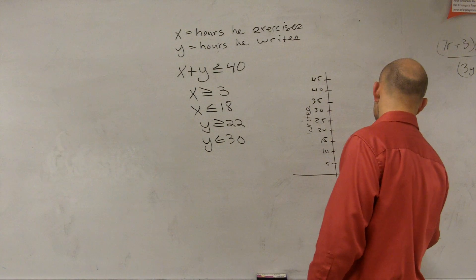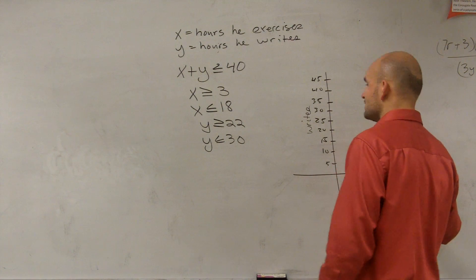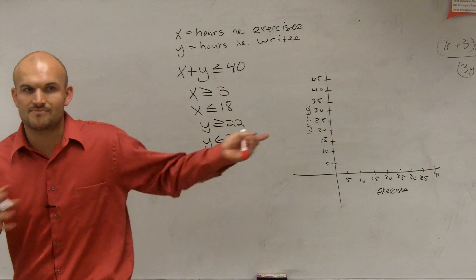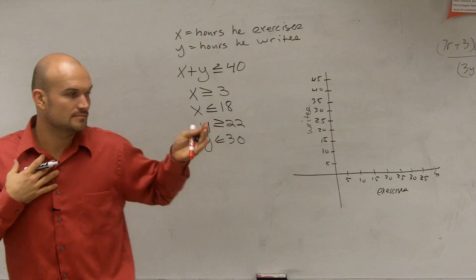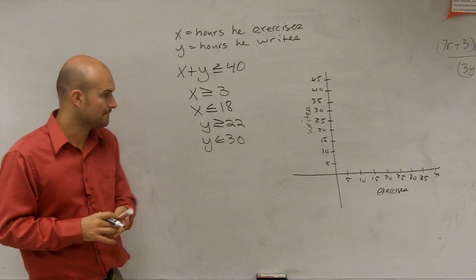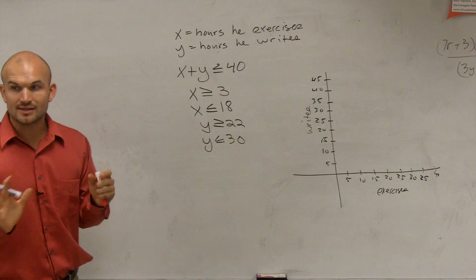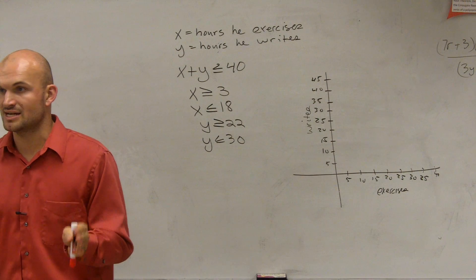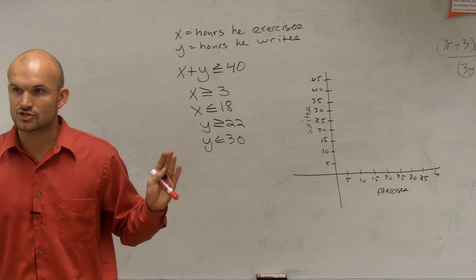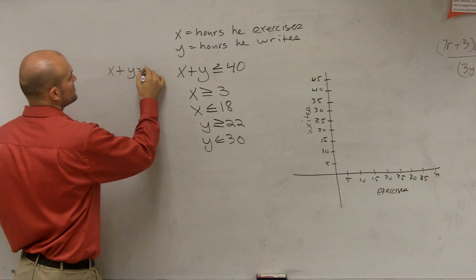My x-axis will be exercises. It doesn't matter which variable you assign to which axis since the hours don't depend on one another. To graph these, forget about the inequality signs for a minute and just graph them as equations. So graph x plus y equals 40.